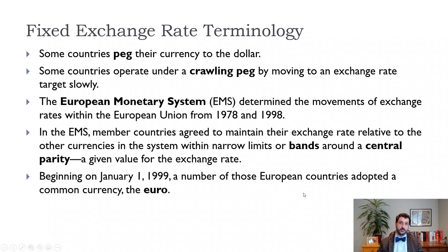We have our interest rate parity condition: one plus the domestic interest rate equals one plus the foreign interest rate times the ratio of the current exchange rate to the expected future exchange rate. If we have a fixed exchange rate so that the exchange rate is always equal to some E-bar, then this ratio becomes one. That means our interest parity condition says that the domestic interest rate has to be equal to the foreign interest rate.